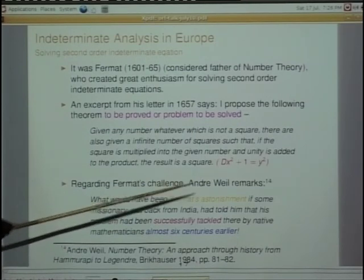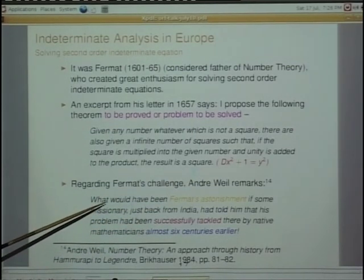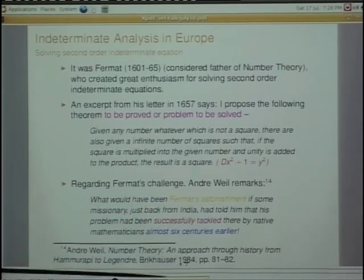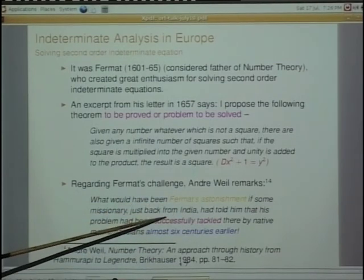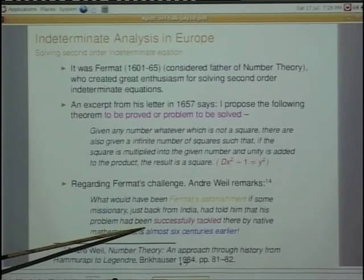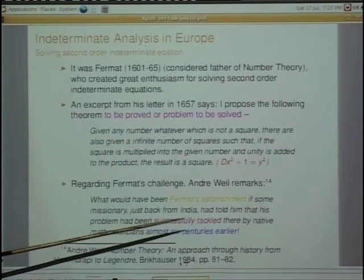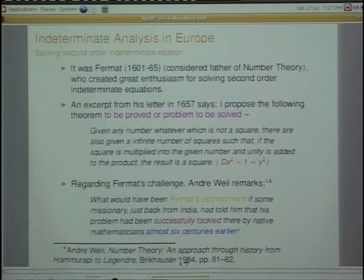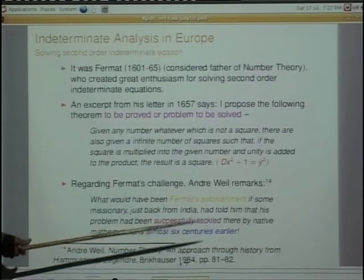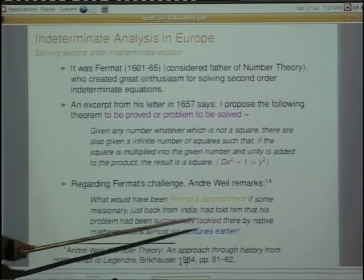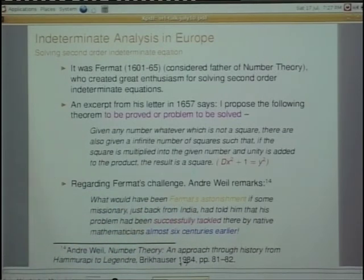Fermat chose this as a very challenging problem in the 1650s. And one scholar asks: what would have been Fermat's astonishment if some missionary just back from India had told him that this problem had been successfully tackled there by native mathematicians almost six centuries before? Brahmagupta did not give a complete solution, but gave a very important principle. The complete solution was given about four centuries later — this is called the Chakrawala method.